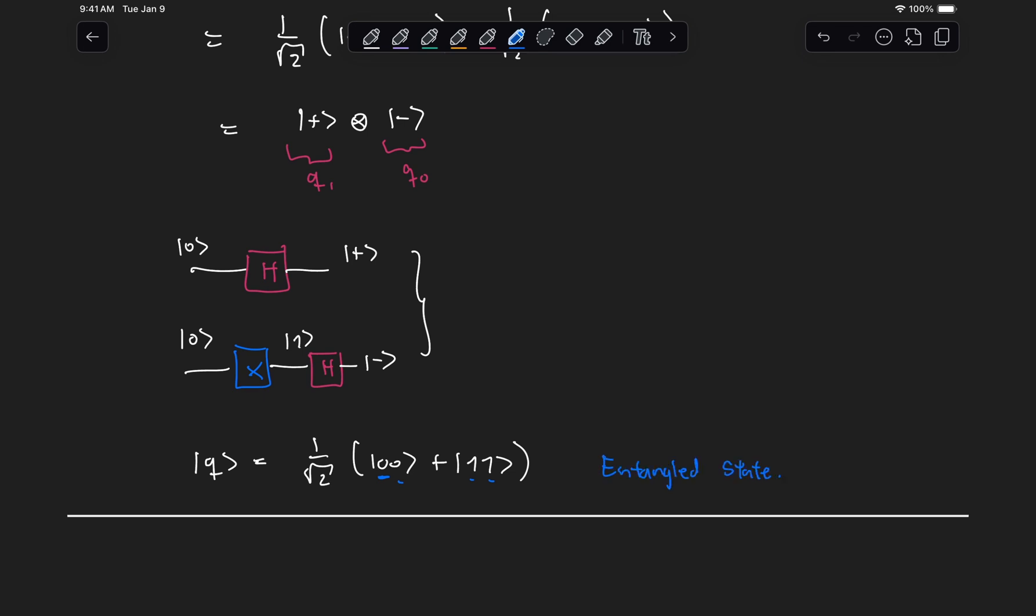Now you might be wondering, well, how do I generate this type of states? And what do they physically mean? I mean, when we have separate states, we can think of this as having some electron here, and an electron down here.